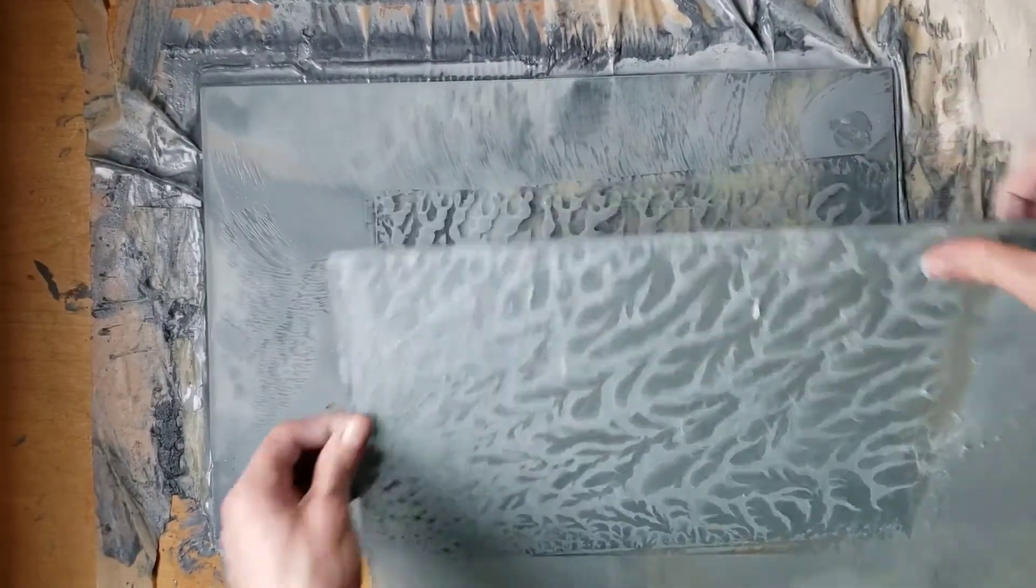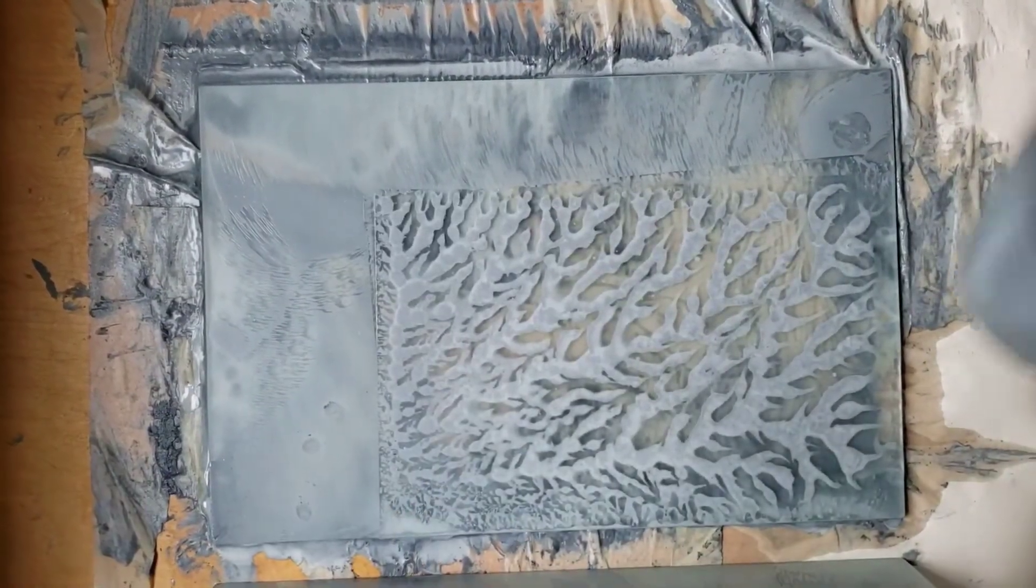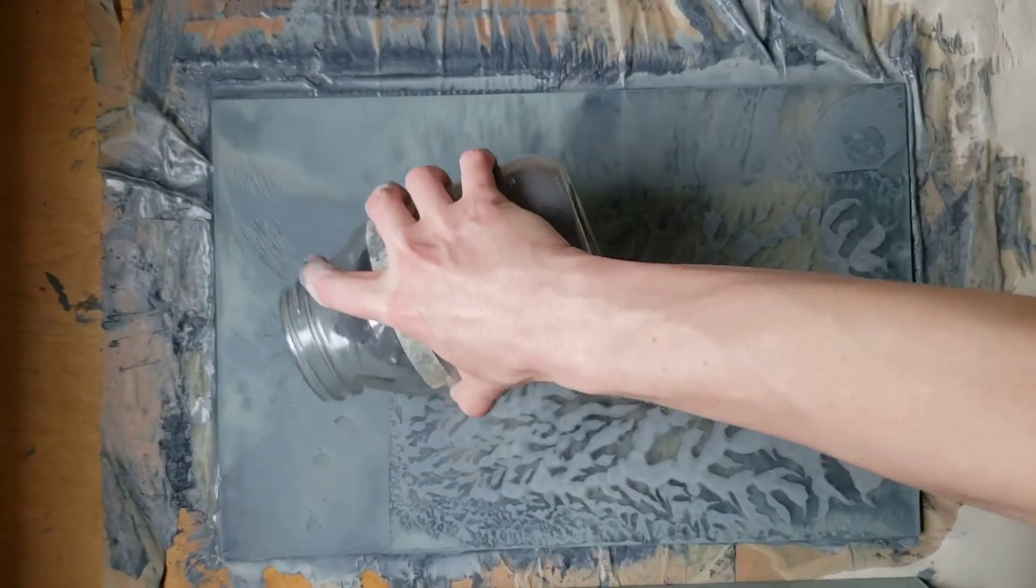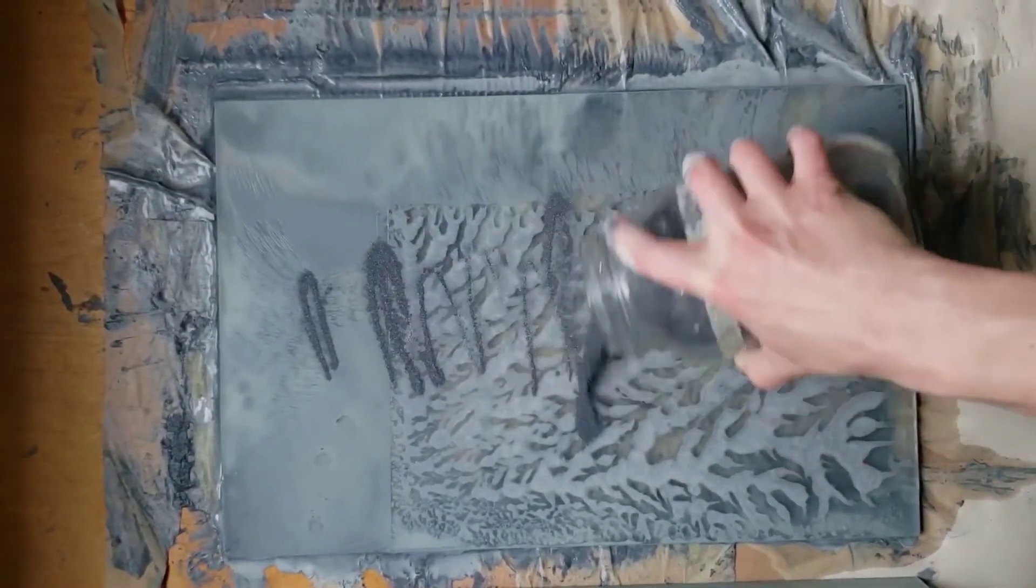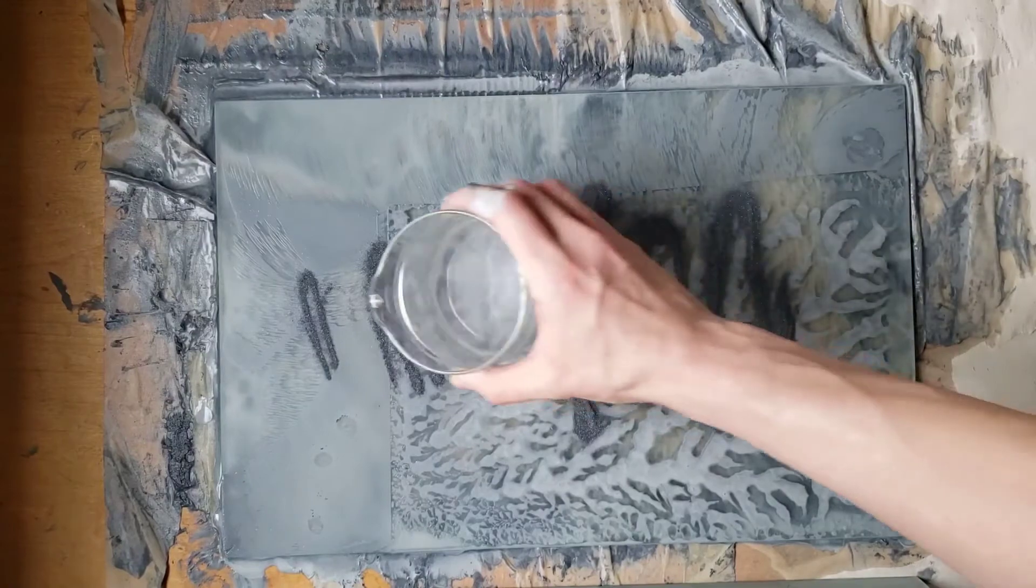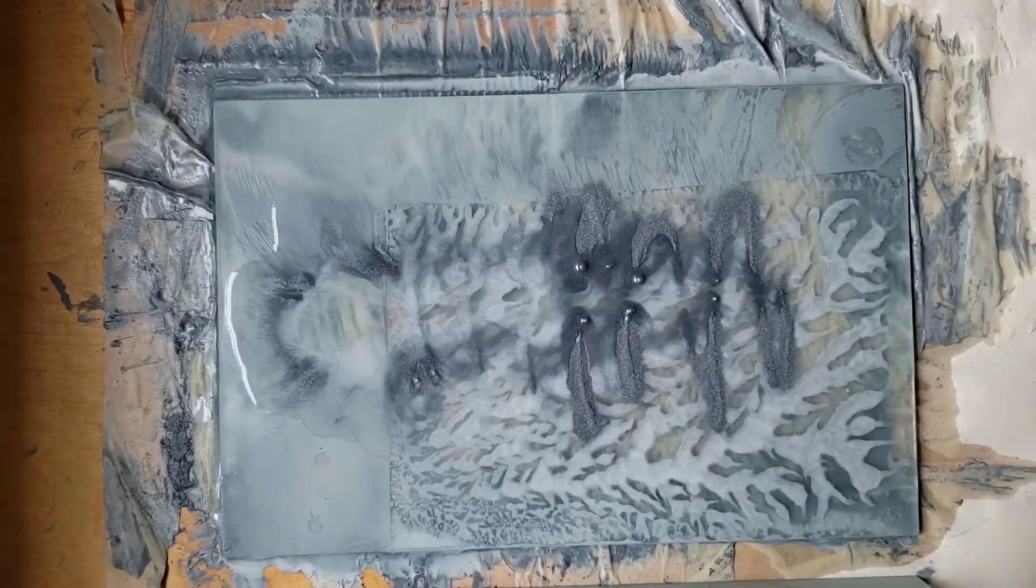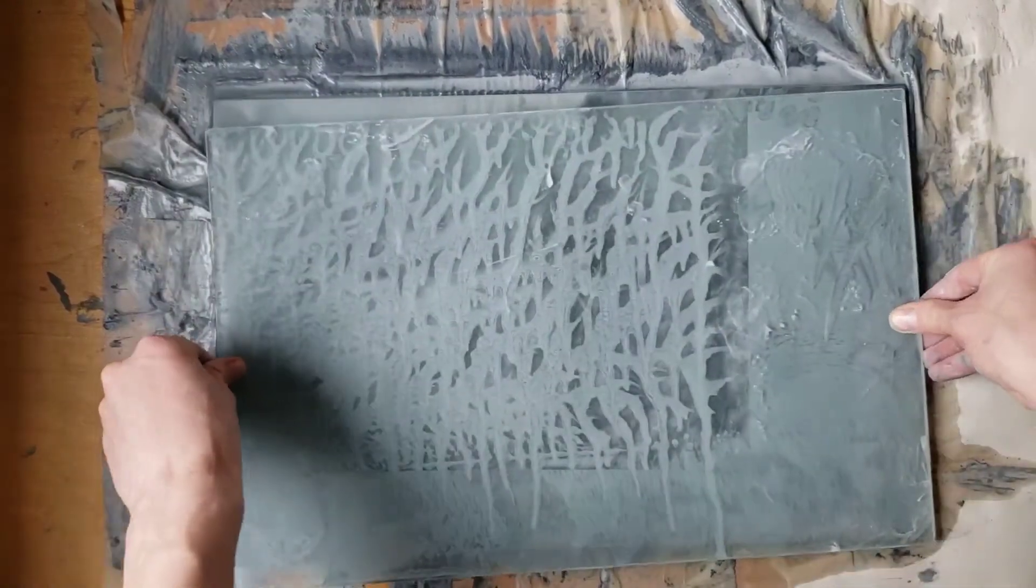In general, you only want to frost one side of the glass. Frosting two sides will create additional plate tone. However, you can do this if you want to draw on both sides. This will create different effects because the back of the glass will allow more light to get in between it and the plate during exposure.